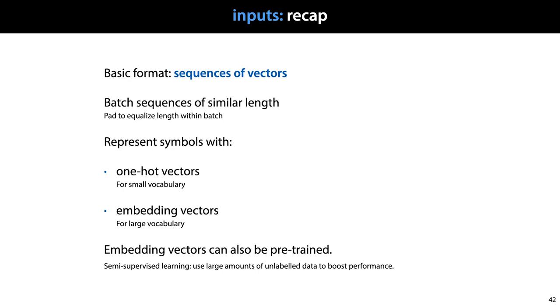If our input is a sequence of symbols, we can translate this to a sequence of vectors by mapping the symbols to one-hot vectors if the vocabulary is small, or mapping the symbols to embedding vectors if the vocabulary is larger.